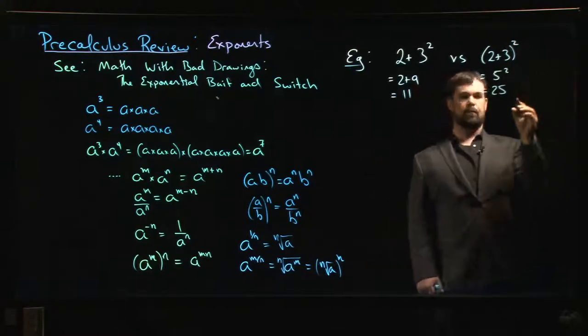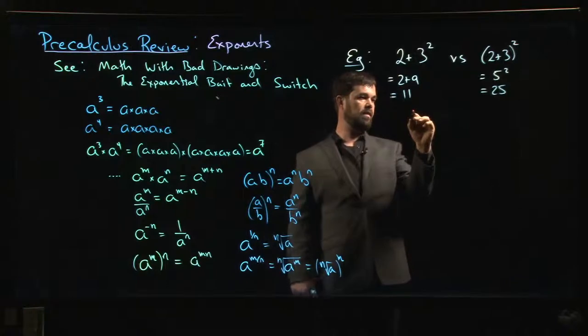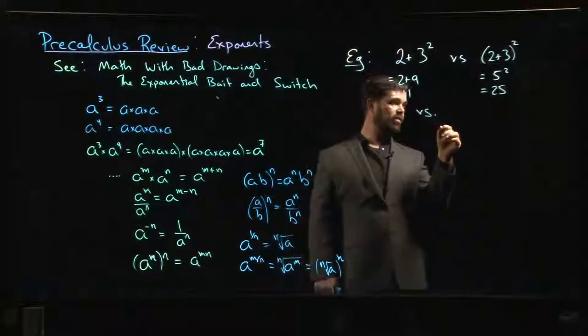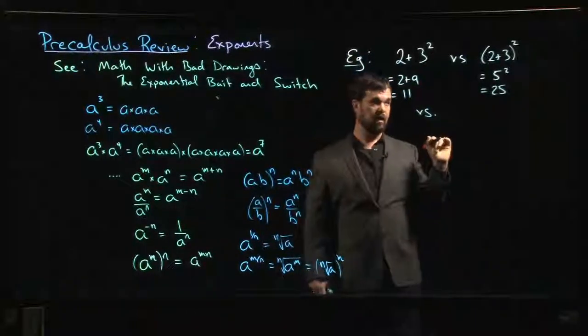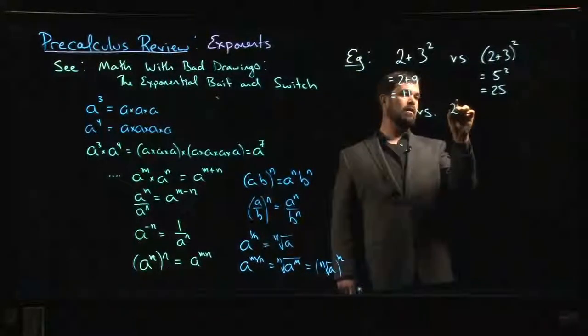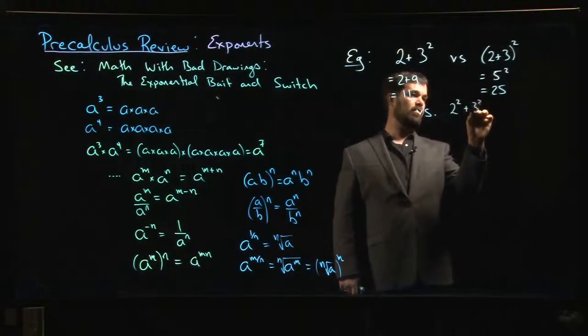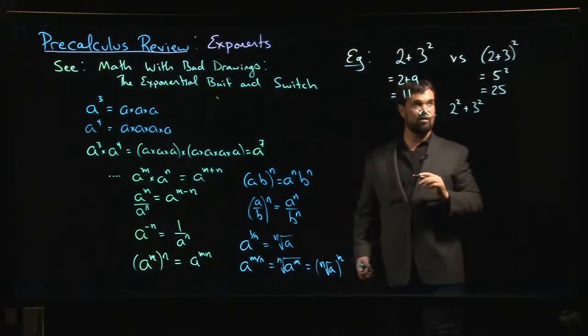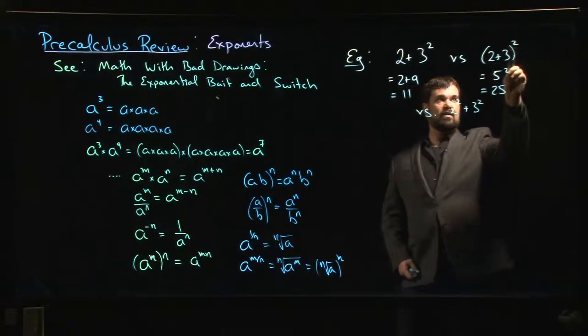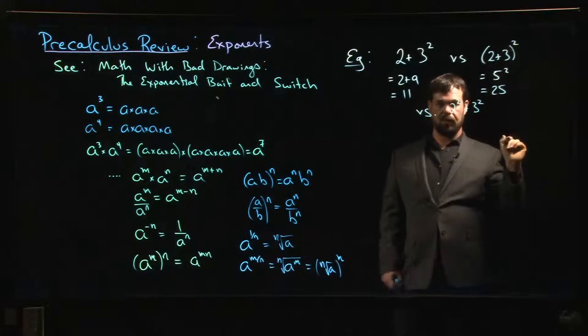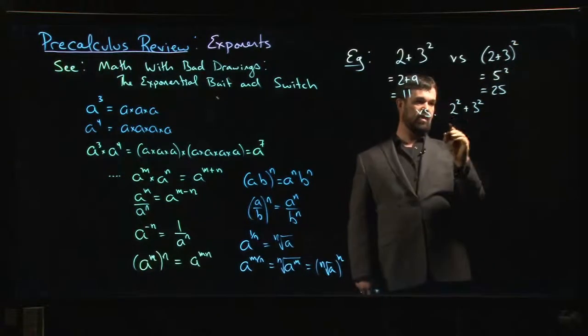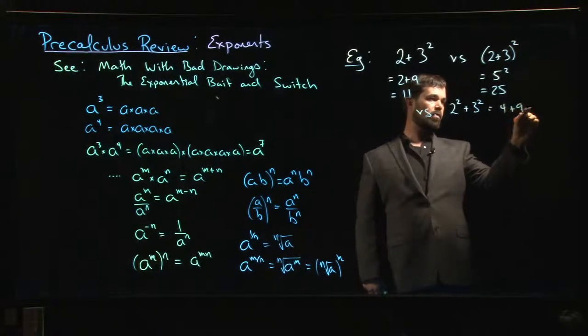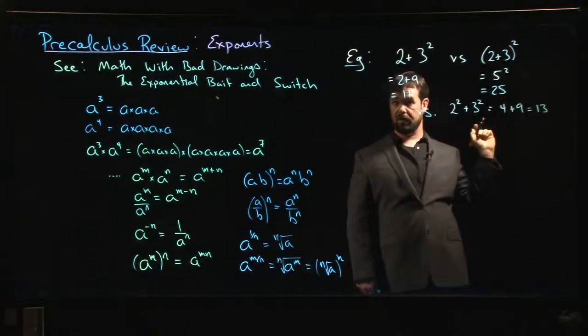Maybe the other one we should throw in here—this is one that again is a common mistake, maybe not when there's numbers in but definitely once there's an X in there—2² + 3². There's always this tendency, this wishful thinking, we want to just apply the exponent to both things. But we know that this is not right. 2² is 4, 3² is 9, 4 + 9 is 13—very different answers.